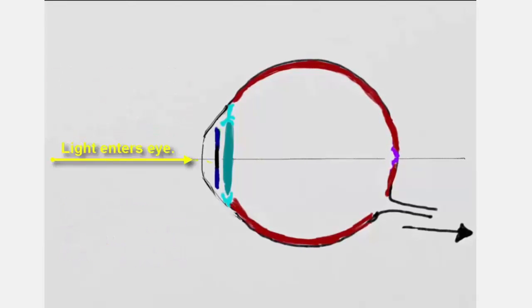This might seem a little counterintuitive. Light from the bottom of the visual field, or the area below the point on which we're focusing, ends up at the top of the retina, while light at the top of the visual field ends up at the bottom of the retina.